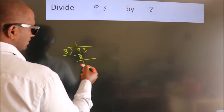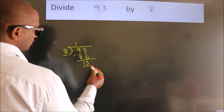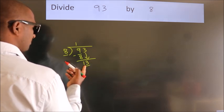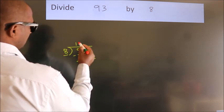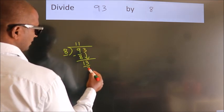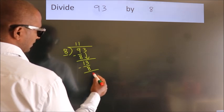After this, bring down the next number. So, 3 down. So, 13. A number close to 13 in 8 table is 8 once, 8. Now, we subtract. We get 5.